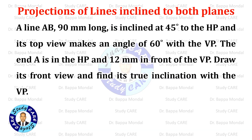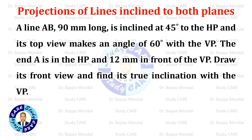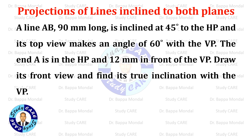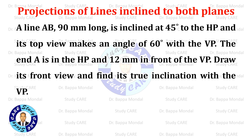A line AB, 90 mm long, is inclined at 45 degrees to the HP and its top view makes an angle of 60 degrees with the VP. The end A is in the HP and 12 mm in front of the VP. Draw its front view and find its true inclination with the VP.